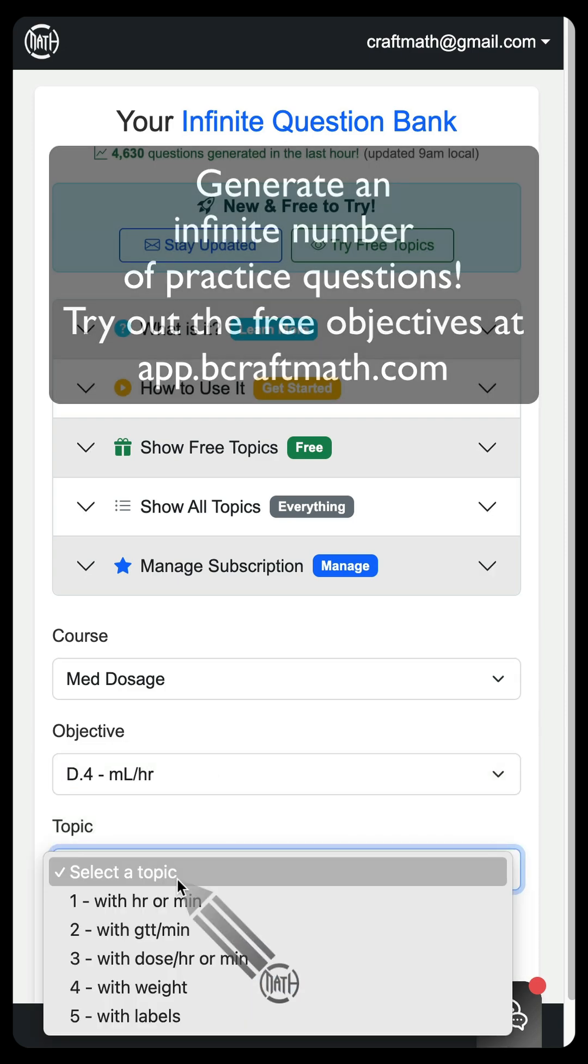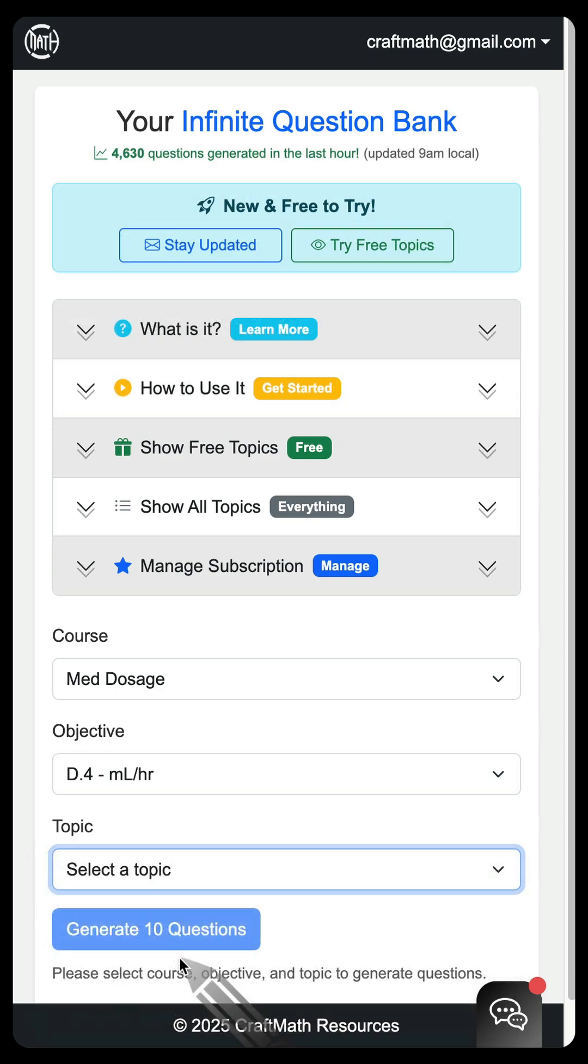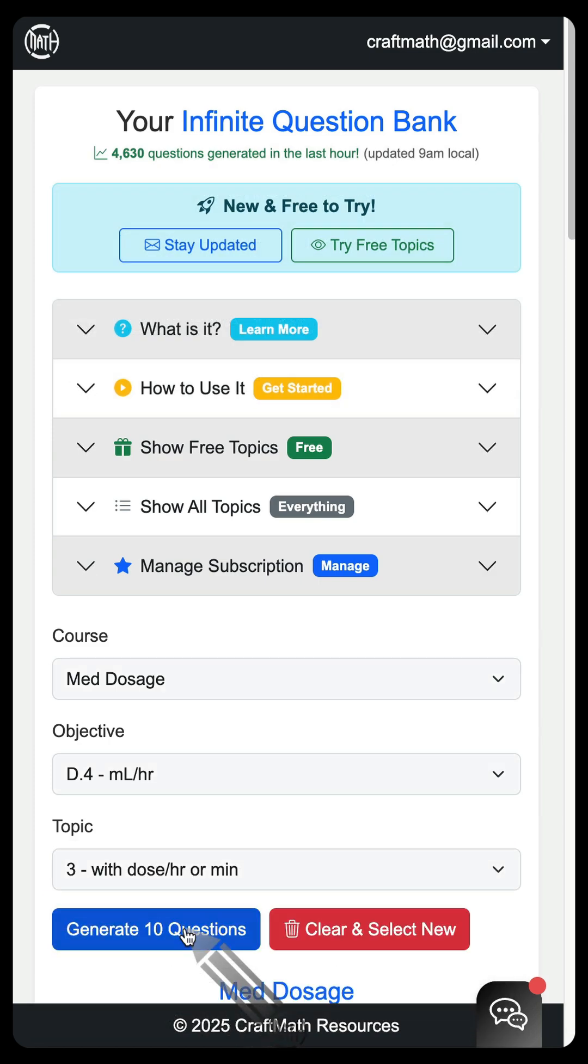For the topic, and I've made this topic available for free, is number three, with dose per hour or minute. Let's go ahead and generate 10 questions.